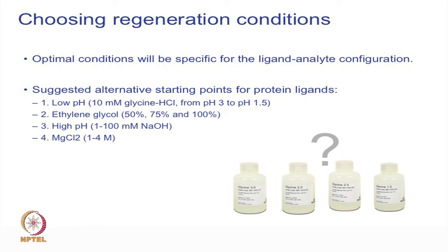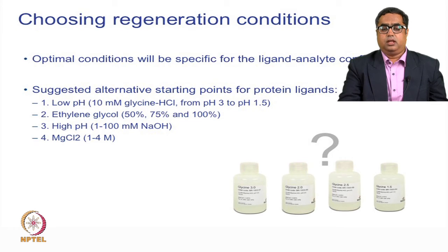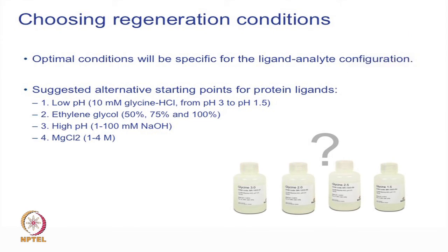Common regeneration solutions include low pH, ethylene glycol, high pH, and magnesium chloride. Once the appropriate regeneration solution is identified, it is important to verify that both the reference and active surfaces are recovered after injection. In this session, we covered identifying appropriate ligand and immobilization conditions, ways to prepare and characterize analyte samples, bulk effects, non-specific binding, different reference surfaces, and regeneration conditions.